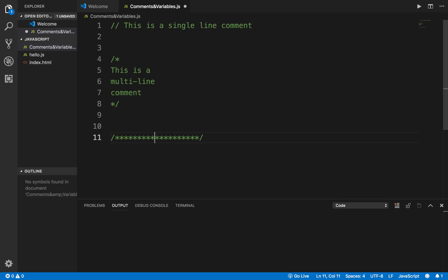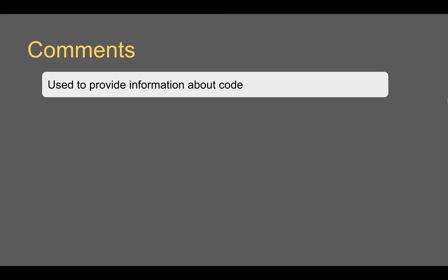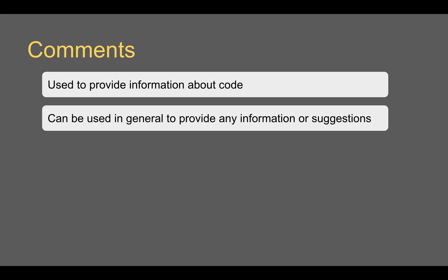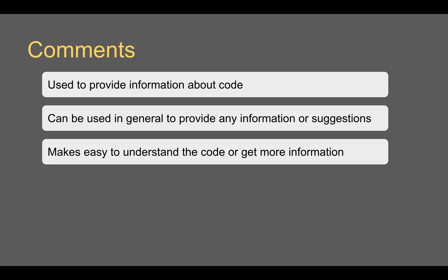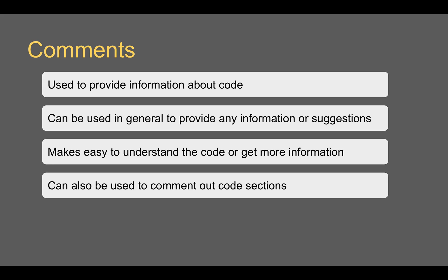Comments are used to provide useful information about your code. You can also use comments to provide any information or suggestions, and it makes it easy for others to read your code. Whenever a new person looks at your code, comments will give them more information and it will become easy to understand.